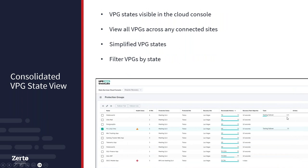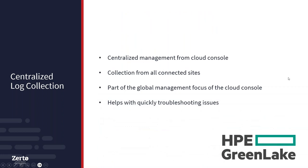Another update for GreenLake for DR is simplification of the virtual protection group states view within the console. With many VPGs being managed globally, we've simplified those states to make it much easier to quickly see their status, filter based on state, quickly identify which VPGs need closer attention, and drill down into VPGs where states indicate a warning or error.